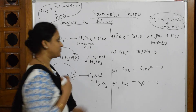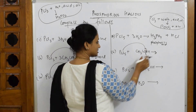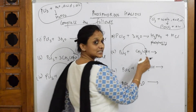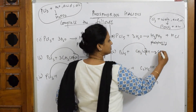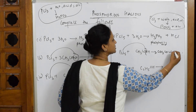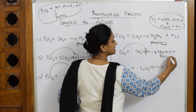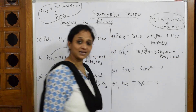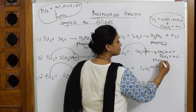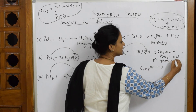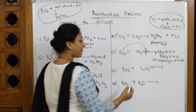For PCl₅ with acetic acid: just like in PCl₃, chlorine goes and replaces the nucleophile — but instead of phosphorous acid, you get POCl₃. So the products are acetyl chloride (CH₃COCl), phosphoryl chloride (POCl₃), and HCl. This compound POCl₃ is called phosphoryl chloride.